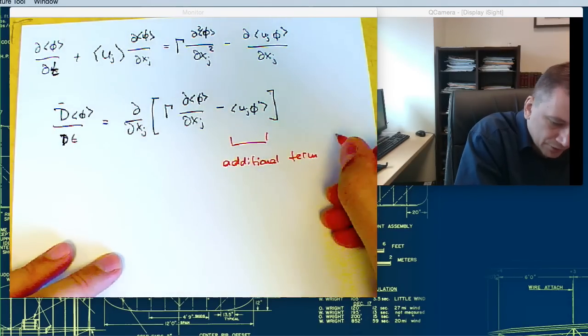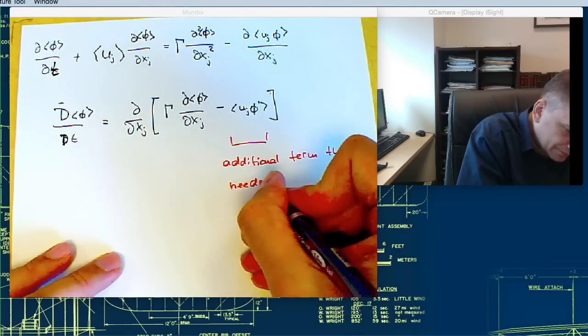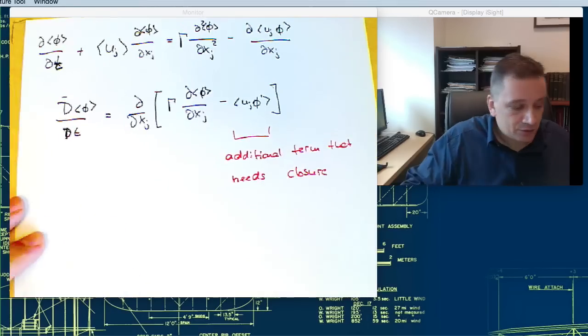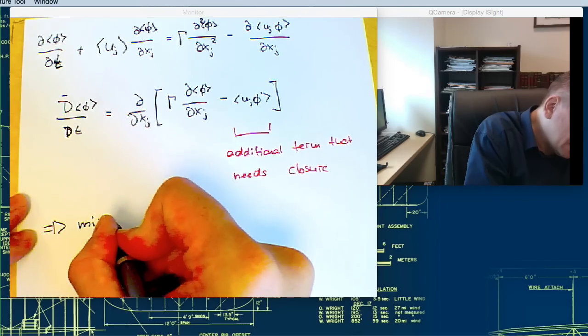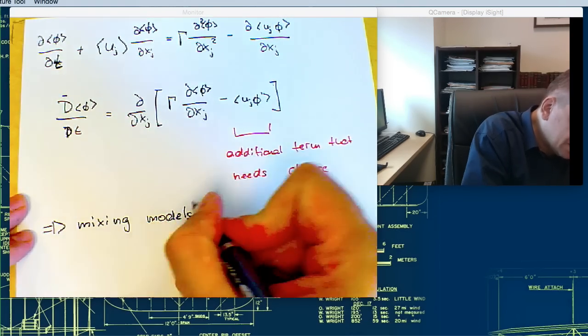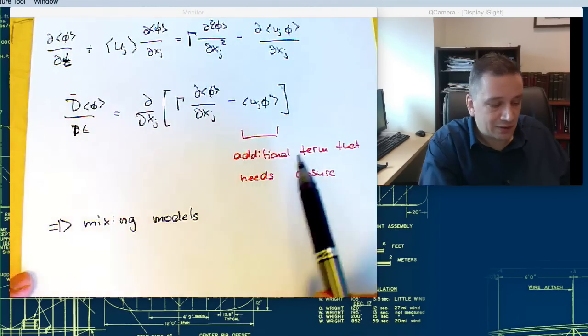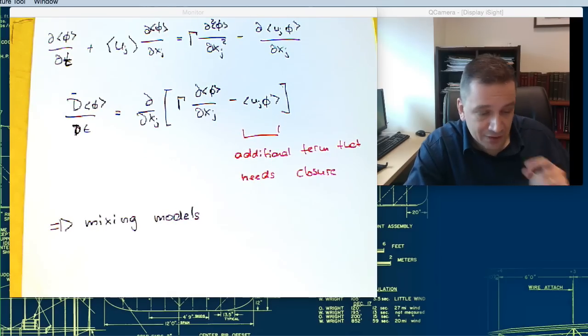And that needs closure. That's why we need to have mixing models. For the mixing models, we're essentially trying to find an expression for this term so you can close this equation and solve the mean scalar transport equation.